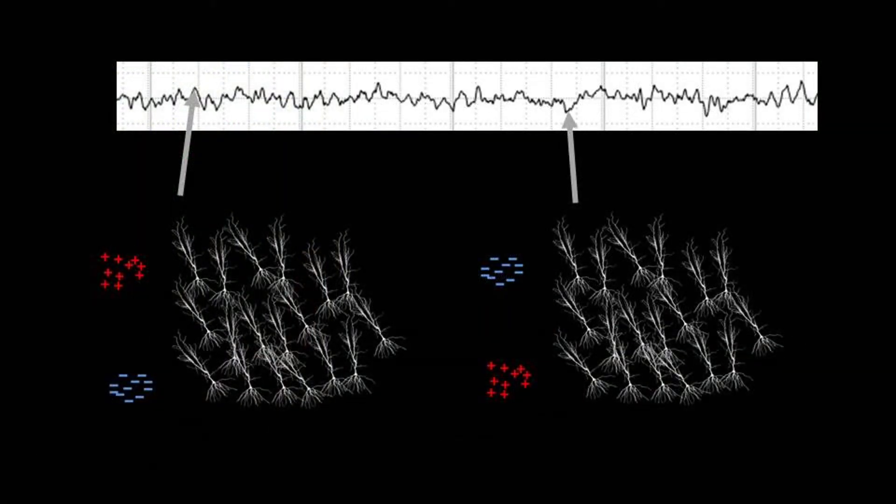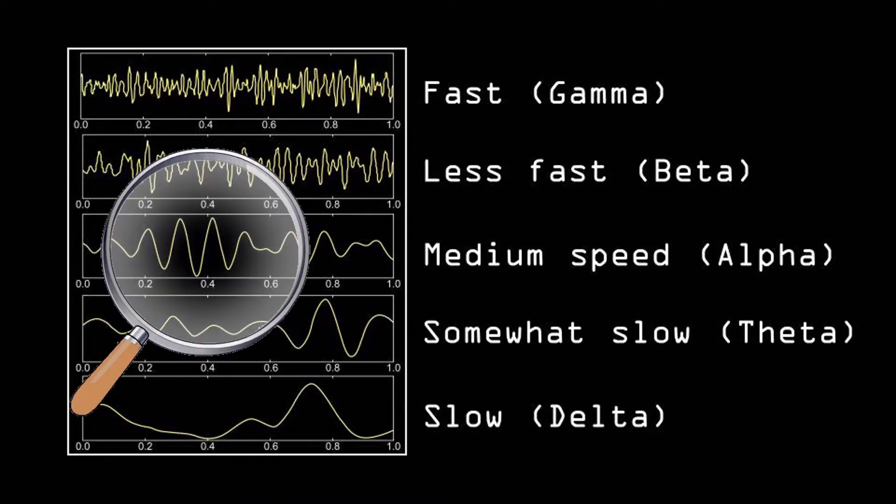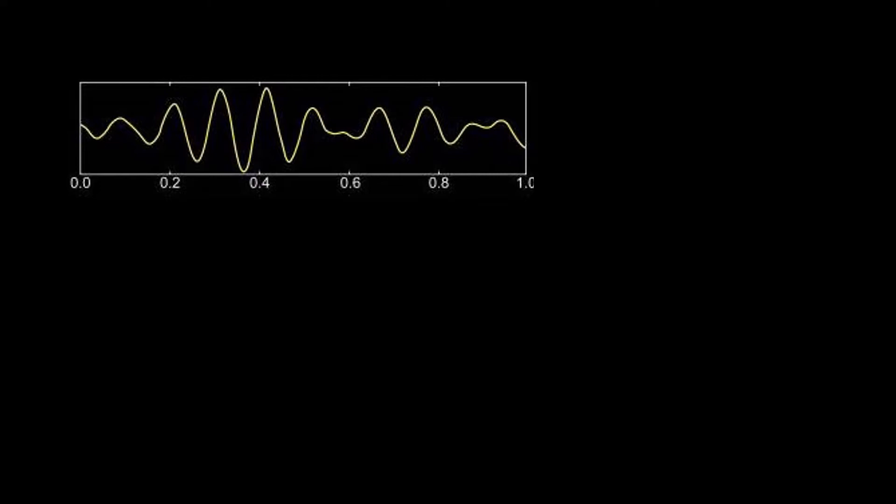Indeed when neurons become active, they often do so in large groups, resulting in brainwaves of different speeds. The speed of a brain oscillation is expressed in its frequency, meaning the number of cycles per second.